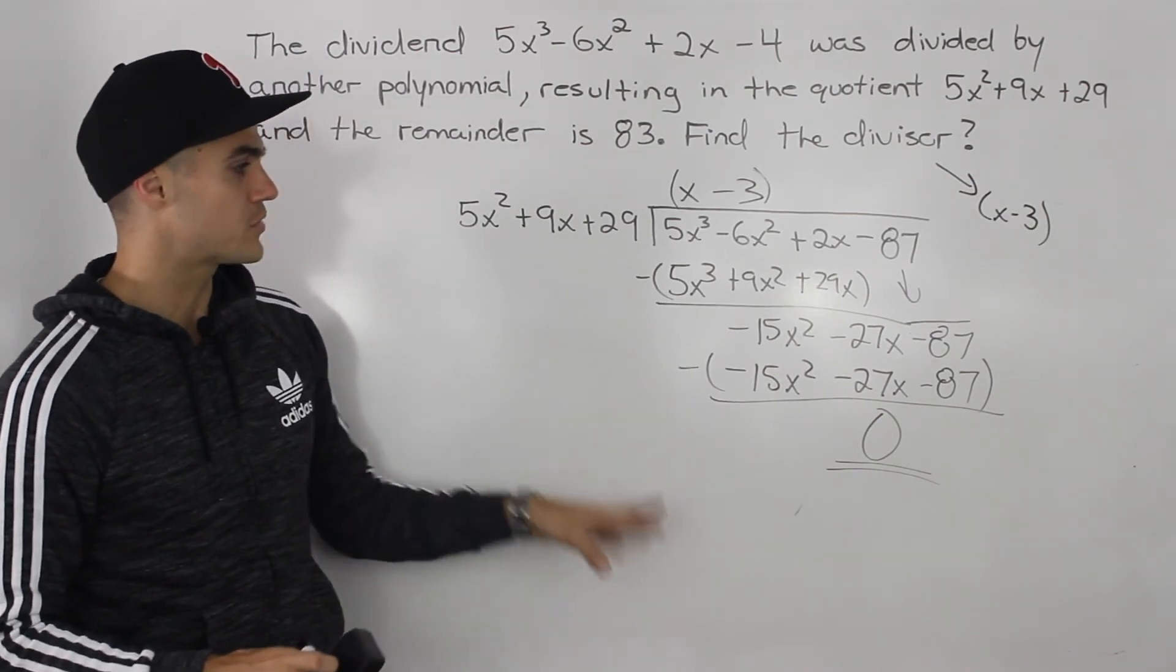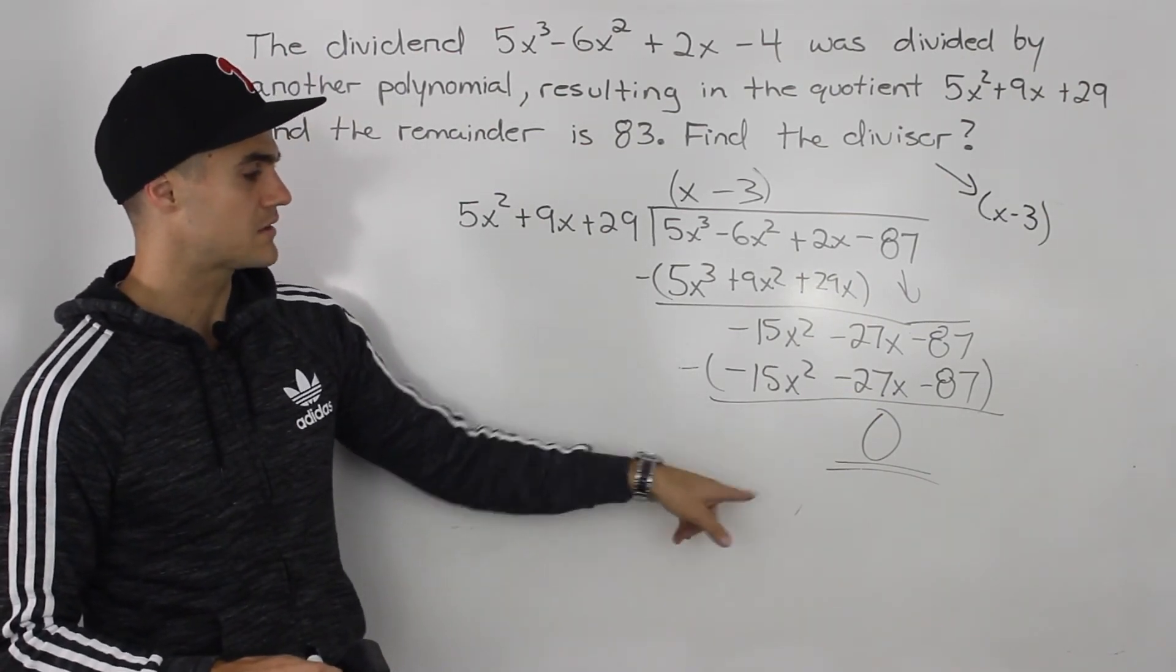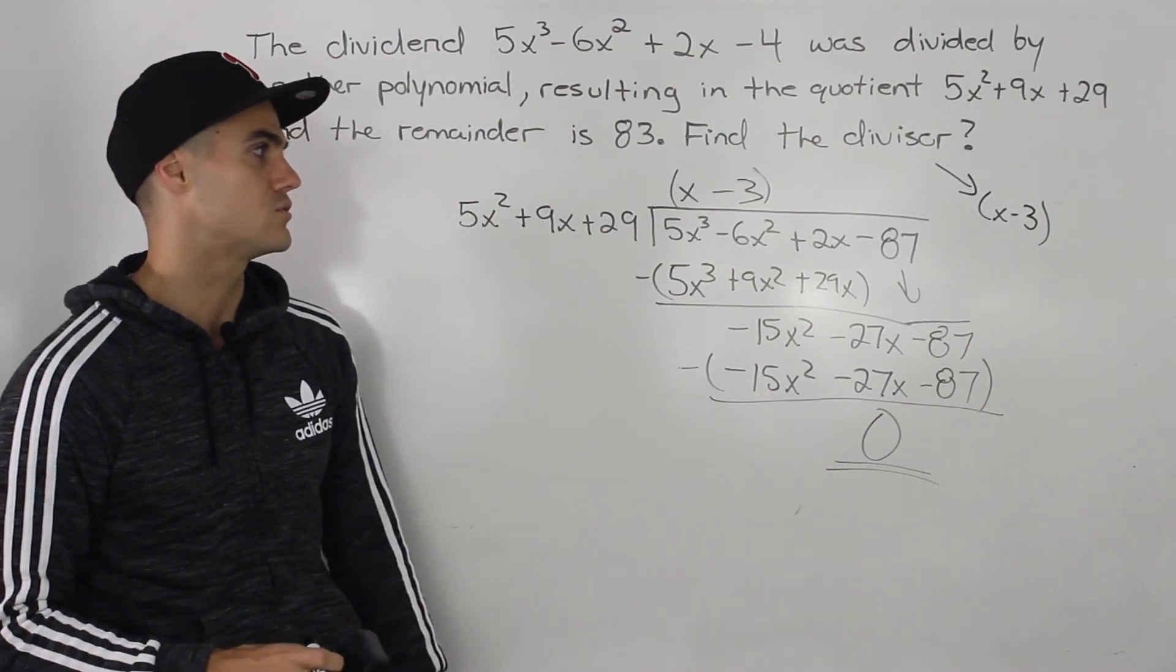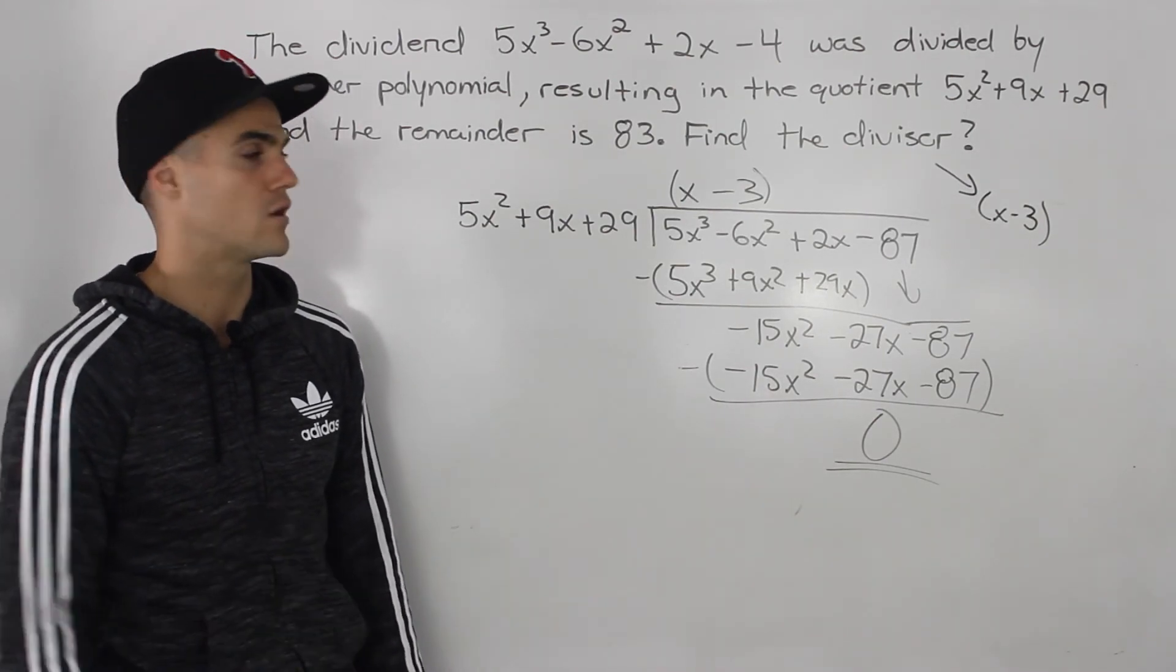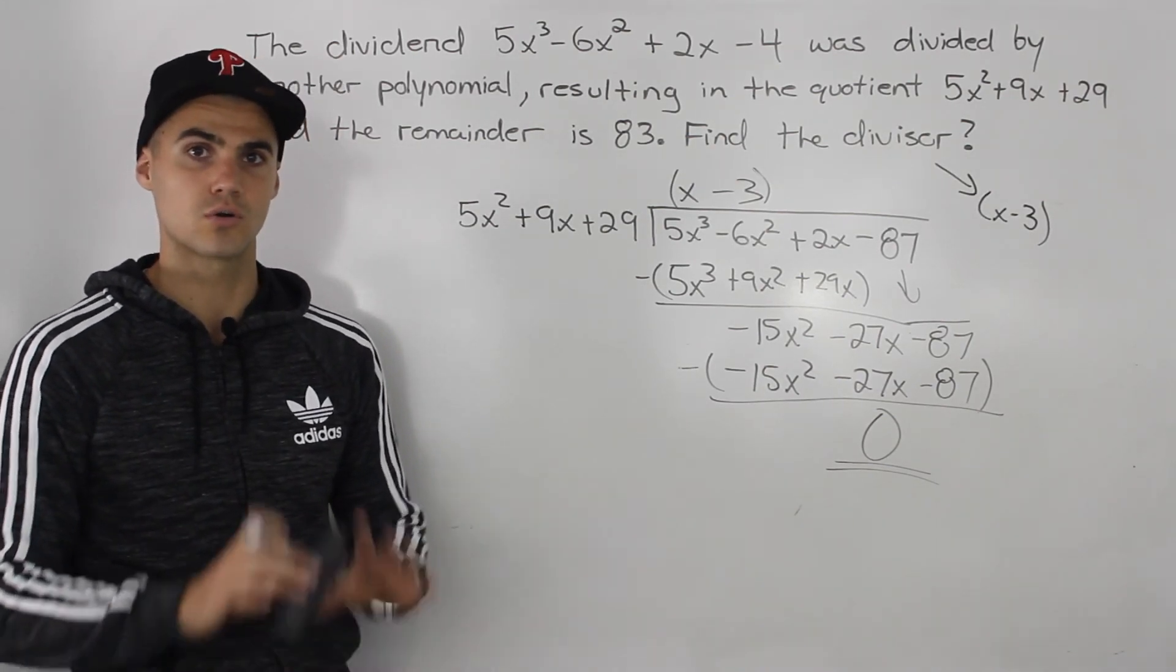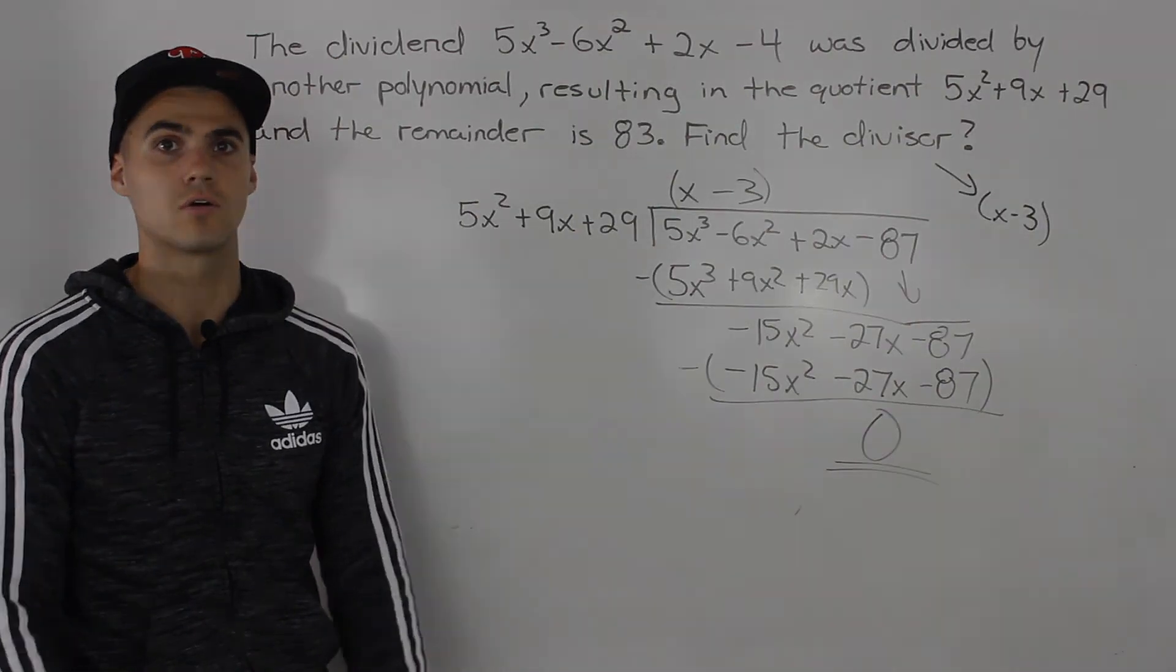But if you follow this process and you get to this long division step at the end and you get a remainder of 0, you can be pretty confident that you've got the right answer. But again, if you have extra time, you can use that time to check your answer, making sure the division statement holds.